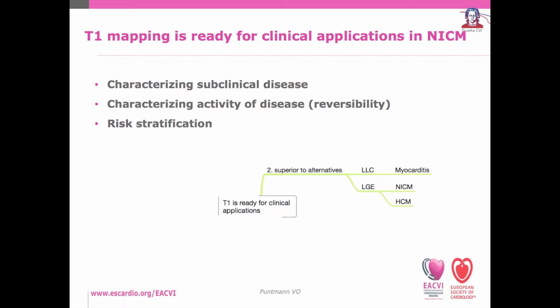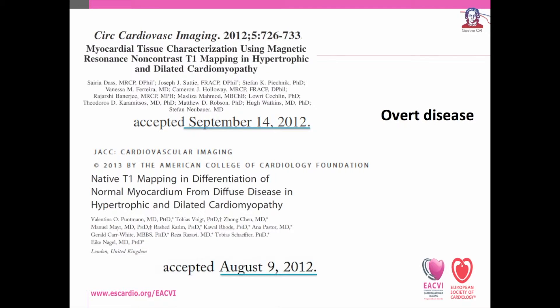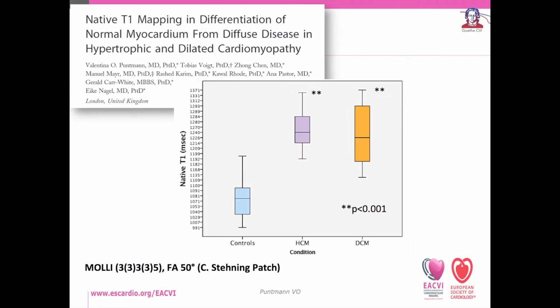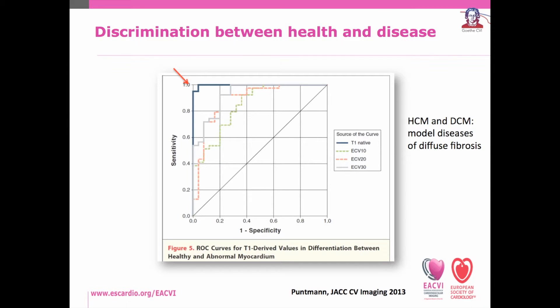T1 mapping is ready for clinical applications in non-ischemic cardiomyopathies, because it can support characterization of subclinical disease and activity of disease, as well as risk stratification. In order to characterize subclinical disease, we had to first define the performance of T1 mapping in overt disease. In these two nearly contemporaneous publications, our group and others have reassuringly shown that T1 mapping indices are able to separate between normal and abnormal myocardium with high diagnostic accuracy.